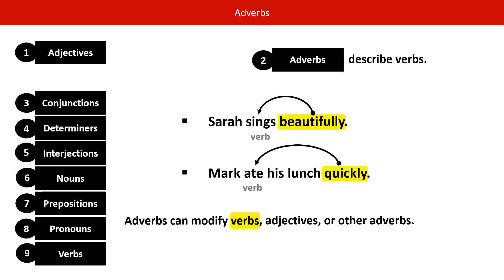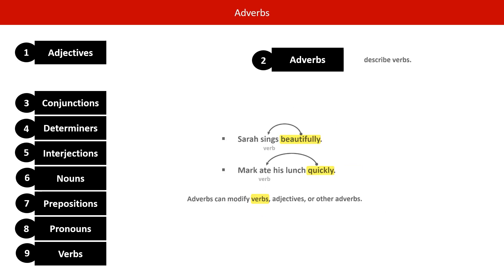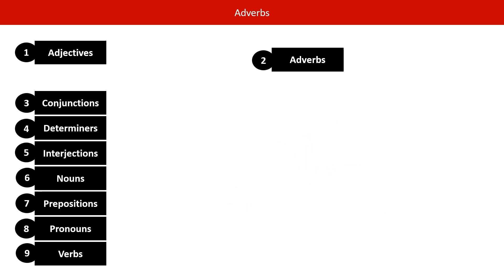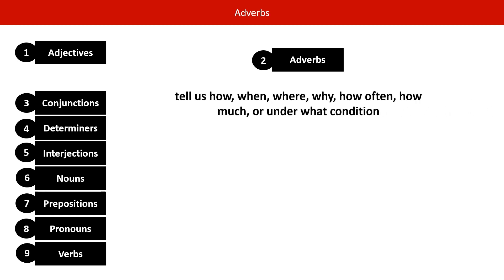Adverbs tell us how, when, where, why, how often, how much, or under what condition an action occurs. That sounds pretty complicated, so let's just look at the first three to get a feel for how adverbs work — how, when, and where.